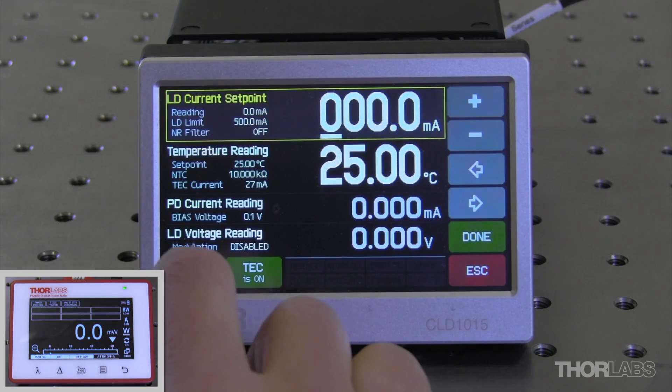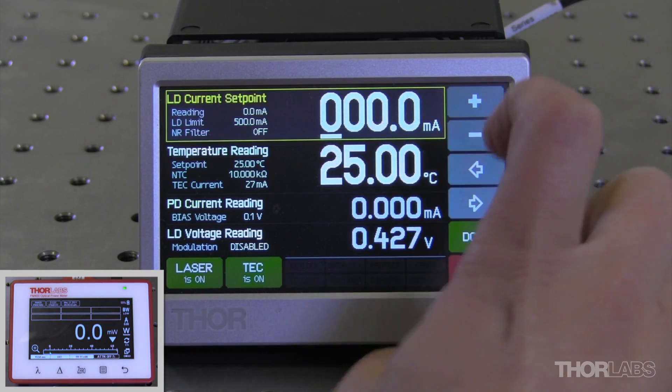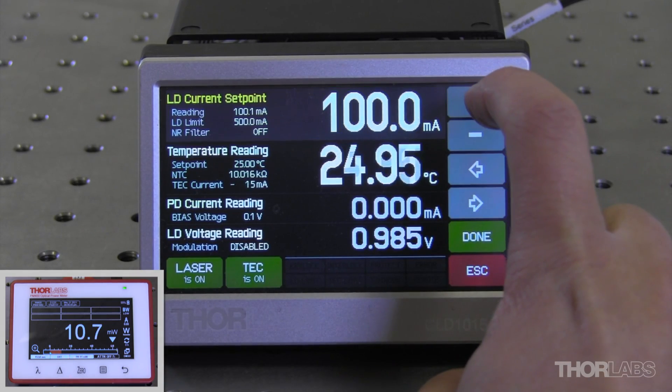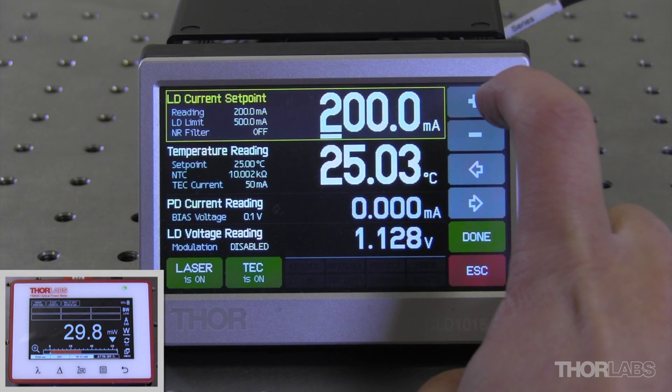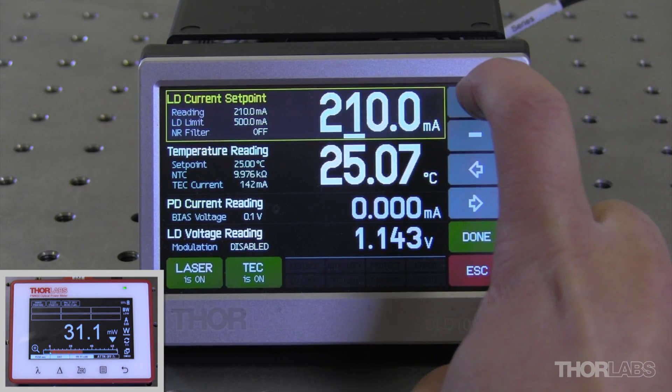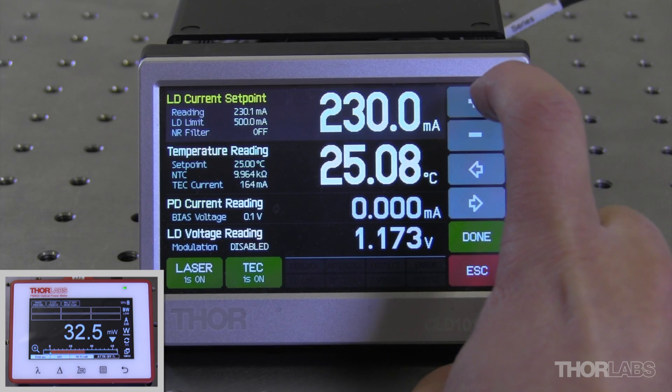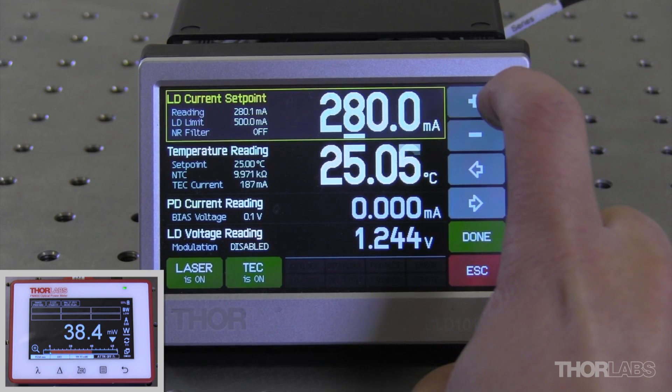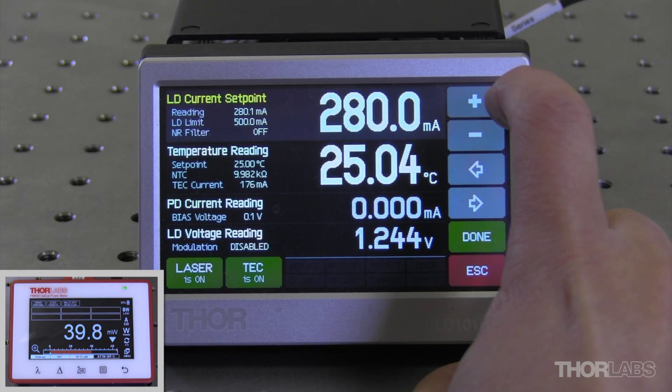So once my fiber is connected, I'm going to turn my laser on with a low drive current. And I'm going to slowly increase the current until I match the output power that was on my spec sheet.